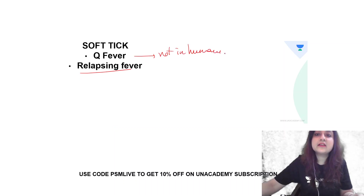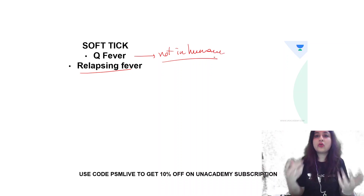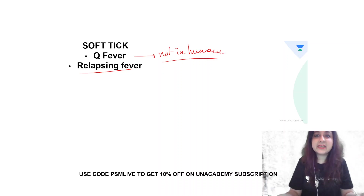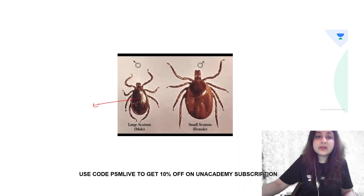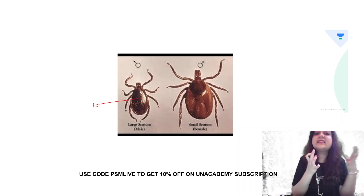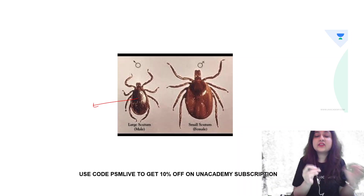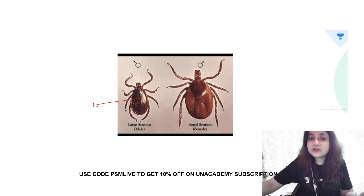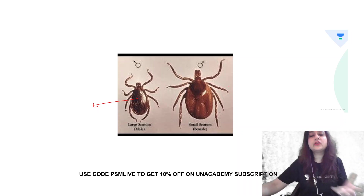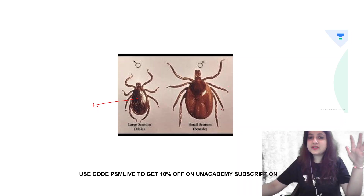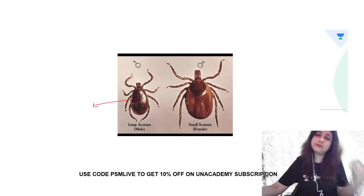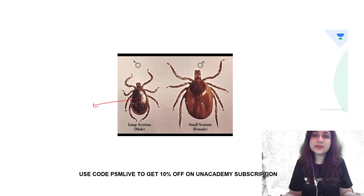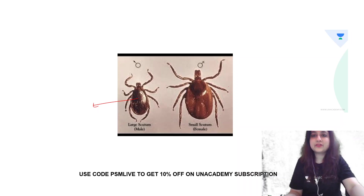Just for your reference: if the scutum covers the entire body, it is a male — large scutum, male. If it covers only part of the body, it is a small scutum — female. Females are shorter in size, so scutum is small; males are bigger in size, so scutum is big. I hope you liked this short video today. I'll come up again with a very short episode very soon. Thank you so much for watching.